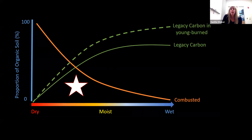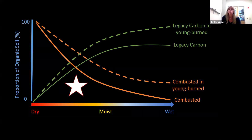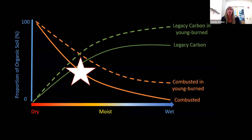We also expected that under changes to the fire regime, such as increased fire frequency, young-age stands of burned forests would not have sufficient time between fires to reaccumulate organic soil carbon pools. They would therefore have more surficial legacy carbon and a greater proportional combustion of the organic soil, which in turn increases the proportion of forests on the landscape vulnerable to legacy carbon loss and becoming a net carbon source.